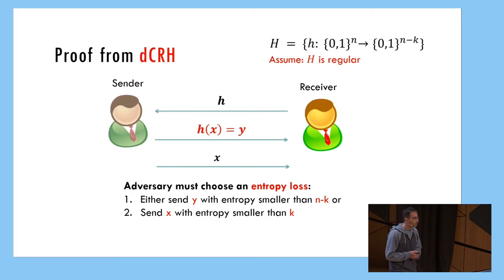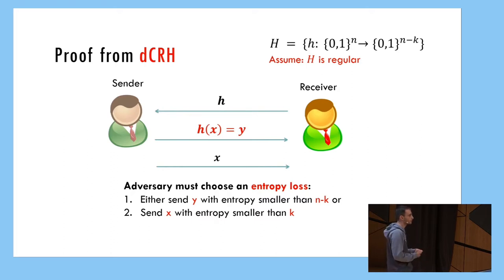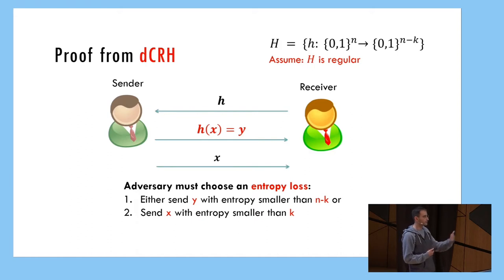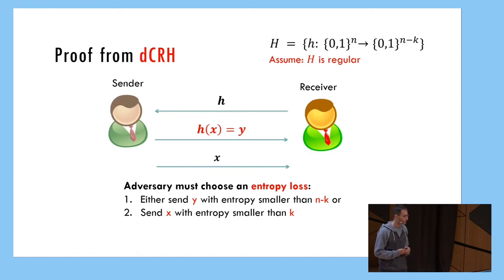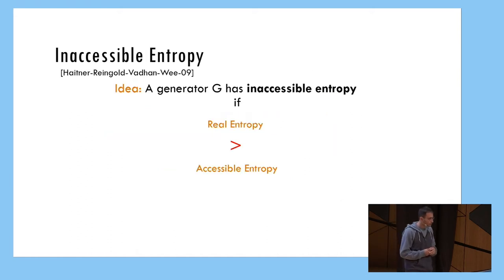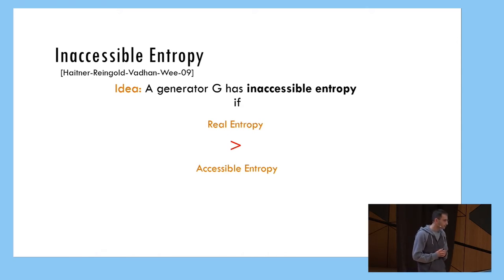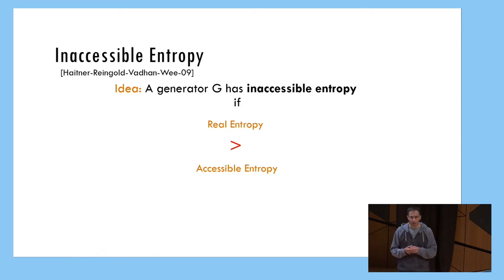What happens if I replace this hash function with a distributional CRH? The adversary can not only open to some x', he can actually open to all the x' that are a pre-image of H of x — so you really get no security at all in this scheme. But still, we claim there is some form of weak binding. Assuming the function H is regular — meaning every image has the same number of pre-images — if H of x was uniform, then the adversary cannot open to a uniform x. Because if H of x is uniform and he opened to a uniform x, he actually found a random collision. So we do have some weak notion of binding.